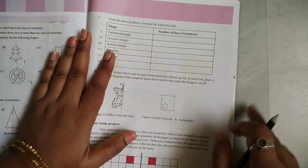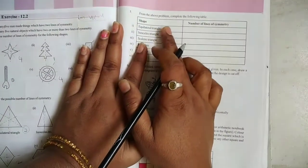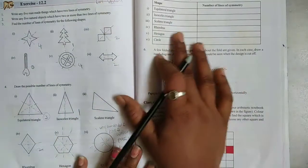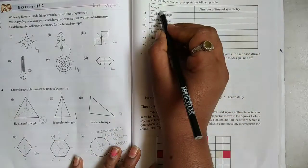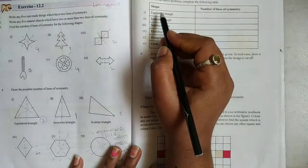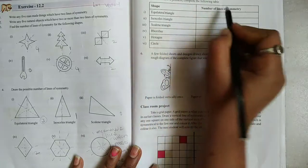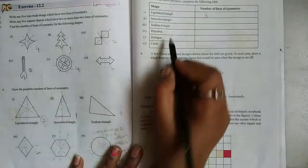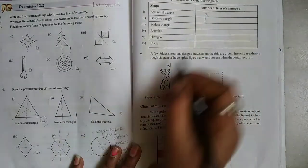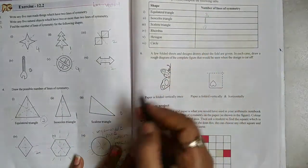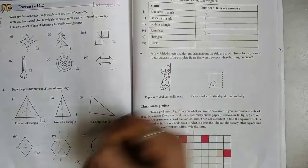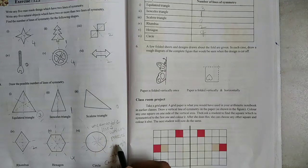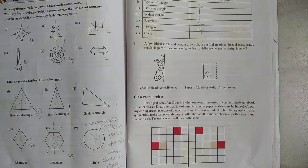Next, fifth one: from the above problem, complete the following table. This is the shape, this is the number of lines of symmetry. Equilateral triangle has 3, isosceles triangle has 1, scalene triangle has 0, rhombus has 2, hexagon has 4, circle has uncountable lines which pass through the center of the circle.